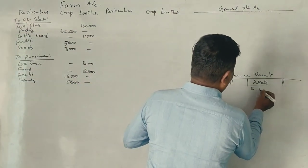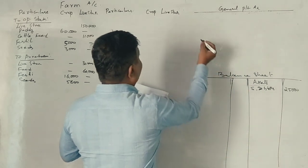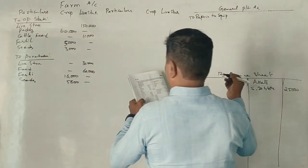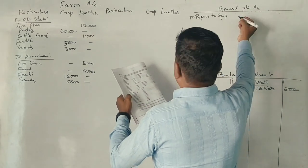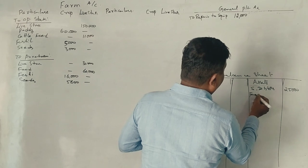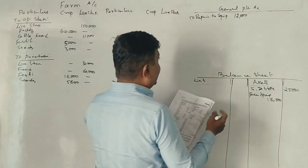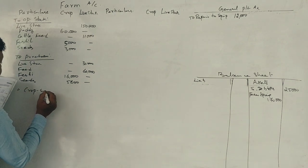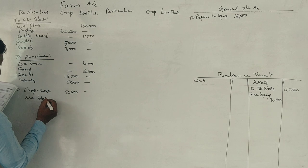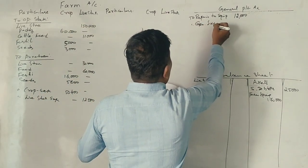Sundry debtors: 25,000. Repairs to farm equipment: 1,70,000. Crop expenses: 50,400. Livestock expenses: 12,500. General expenses: 11,700.